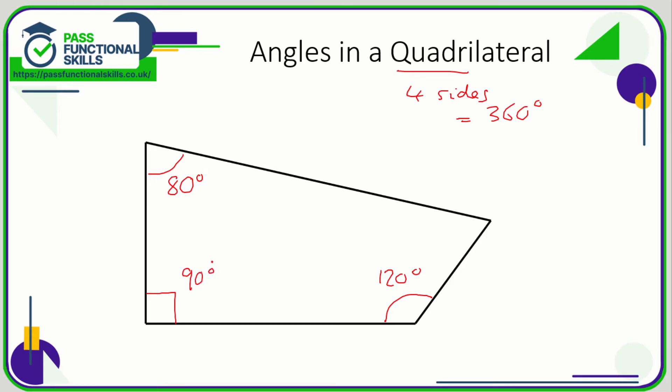So if we add up what we've got, we've got 80 plus 90 plus 120, that is 290. This is a quadrilateral, it's got four sides, so the angles need to add up to 360. So 360 degrees take away 290 degrees equals 70 degrees. So the missing angle here is 70 degrees.